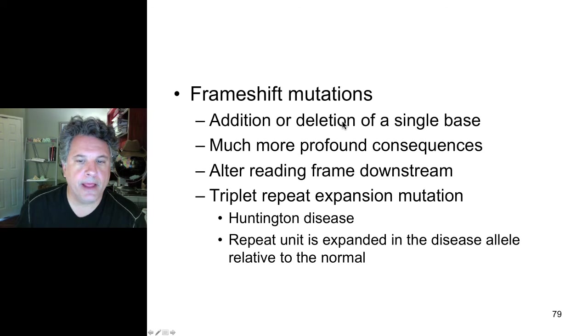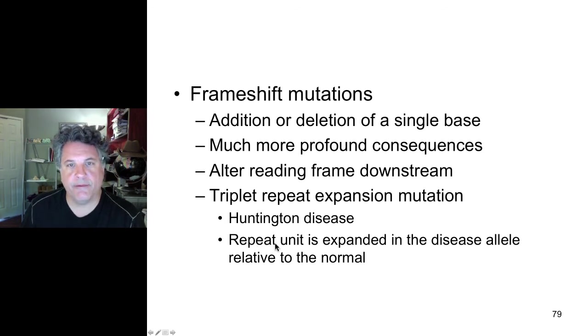Now there are also frameshift mutations that are caused by repeats of triplets of nucleotides that are expanded greatly in particular mutations. For example, Huntington's disease, and there the repeat of triplet nucleotides is expanded. There are many more repeats found than in wild type and that can cause a frameshift and result in Huntington's disease which is a neuromuscular disease.